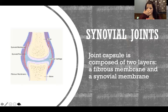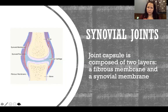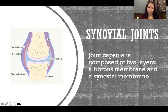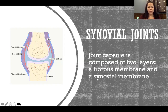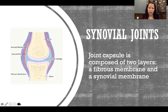A joint capsule is composed of two layers: a fibrous membrane and a synovial membrane. Looking at the picture, the outer blue and purple region is all fibrous membrane — very tough, dense, and protective. The thin red layer lining the inside of the fibrous membrane is the synovial membrane.